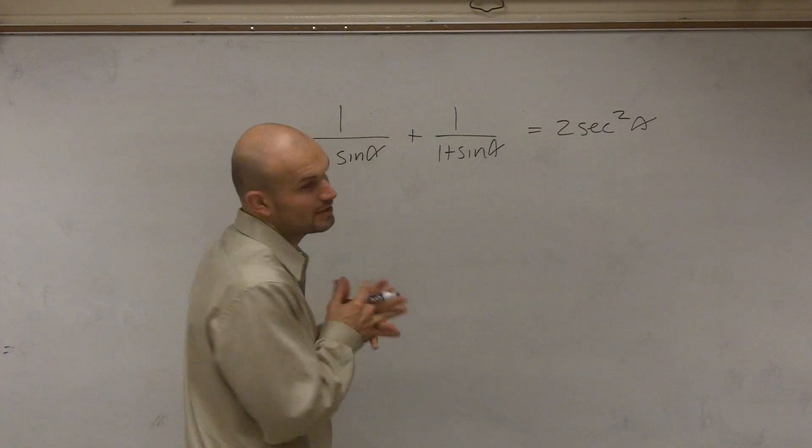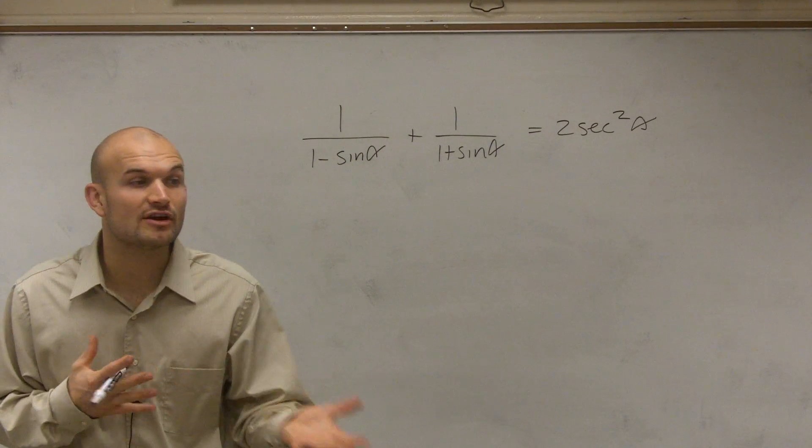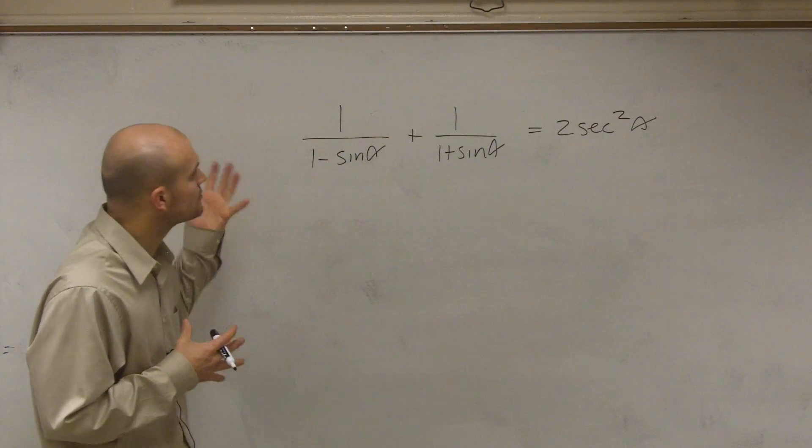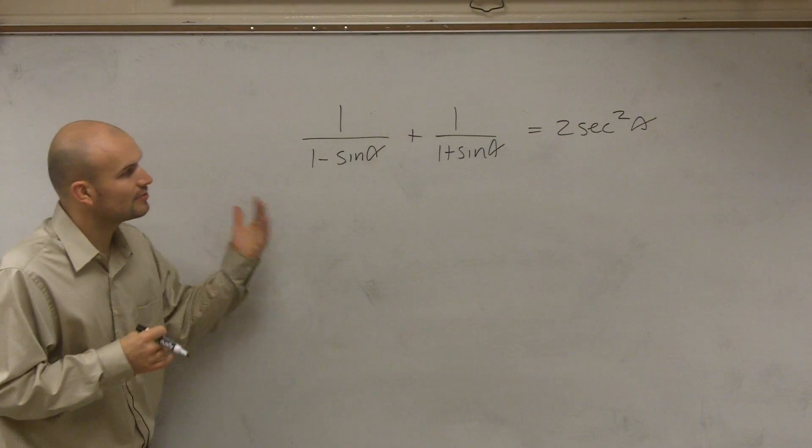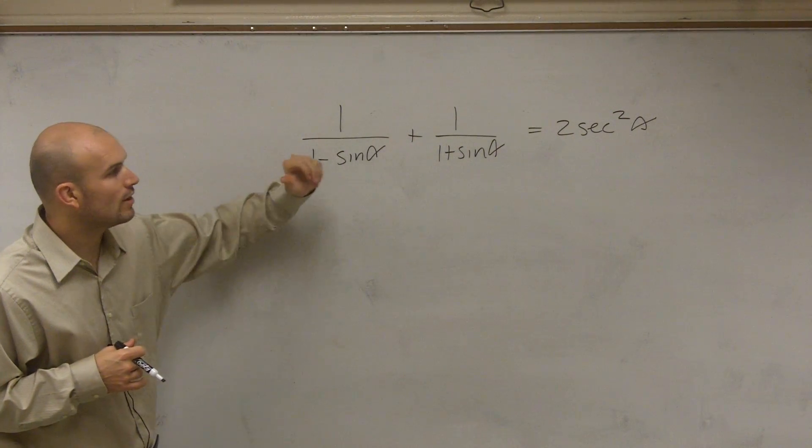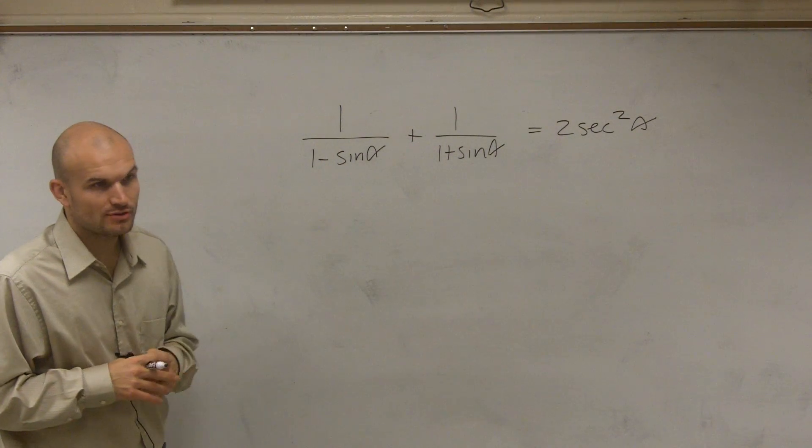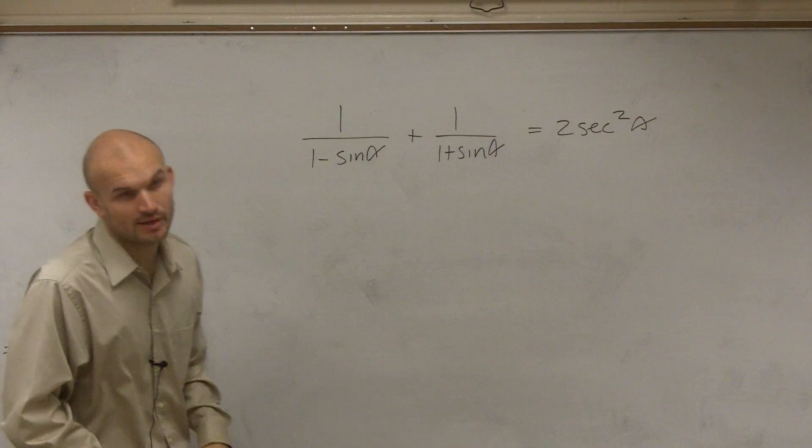All right, so ladies and gentlemen, again, let's go and work on verifying this identity. So what I have is 1 divided by 1 minus sine of theta plus 1 divided by 1 plus sine of theta equals 2 secant squared of theta.